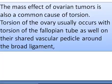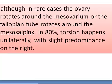Torsion of the ovary usually occurs with torsion of the fallopian tube as well, on their shared vascular pedicle around the broad ligament, although in rare cases the ovary rotates around the mesovarium or the fallopian tube rotates around the mesosalpinx. In 80%, torsion happens unilaterally, with slight predominance on the right.